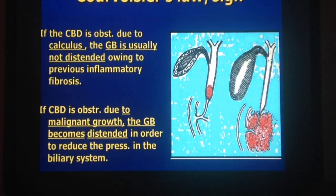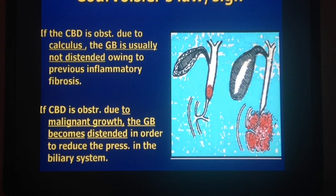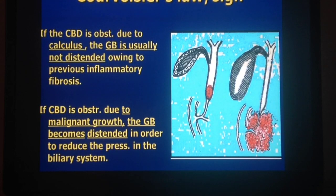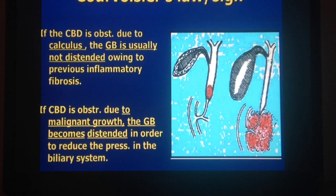Another important fact is Courvoisier's law. Courvoisier's law states that dilation of the gallbladder can only occur when there is an extrinsic obstruction of the bile duct. This can occur in two ways: either there is a malignancy, which can occur in the head of the pancreas, or there can be obstruction of the common bile duct. To differentiate: if the patient presents with jaundice and is also losing weight, we can rule it as a carcinoma. Whereas if the patient is simply jaundiced and the gallbladder is dilated, we can assume it is an obstruction of the common bile duct.